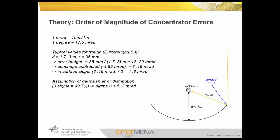If we assume a Gaussian error distribution and want all reflected rays hitting the absorber tube, one standard deviation of surface slope errors is in the range of 1.5 to 3 milliradian. But since the concentrator has other error sources as well — such as deviation of the absorber tube from its design position and tracking errors — the sigma value must be lower than 1.5 to 3 milliradian.